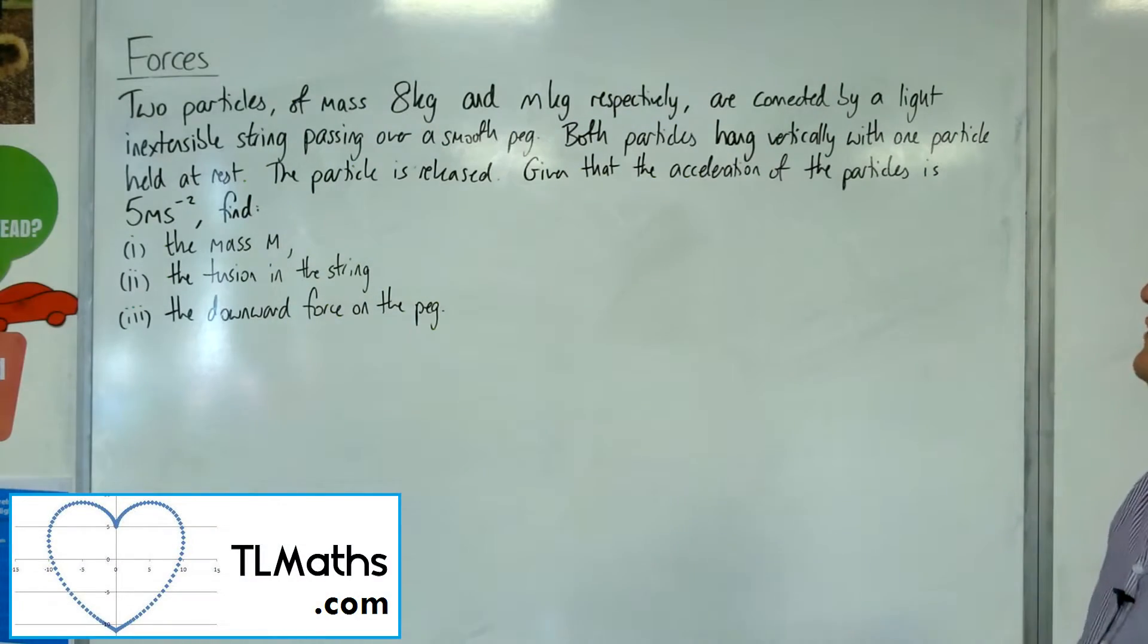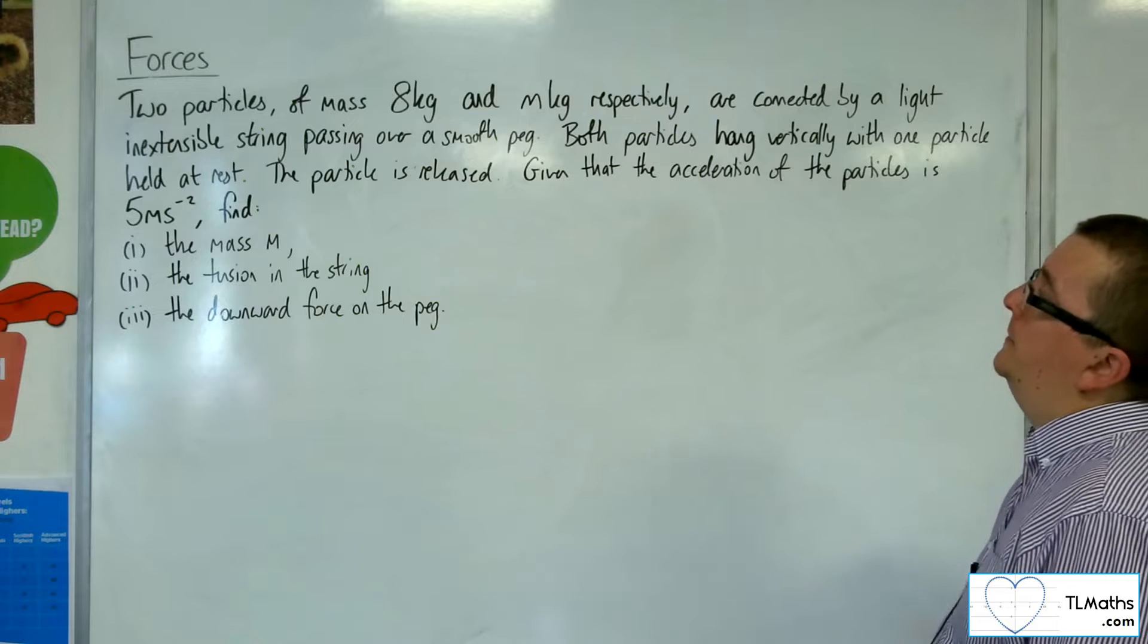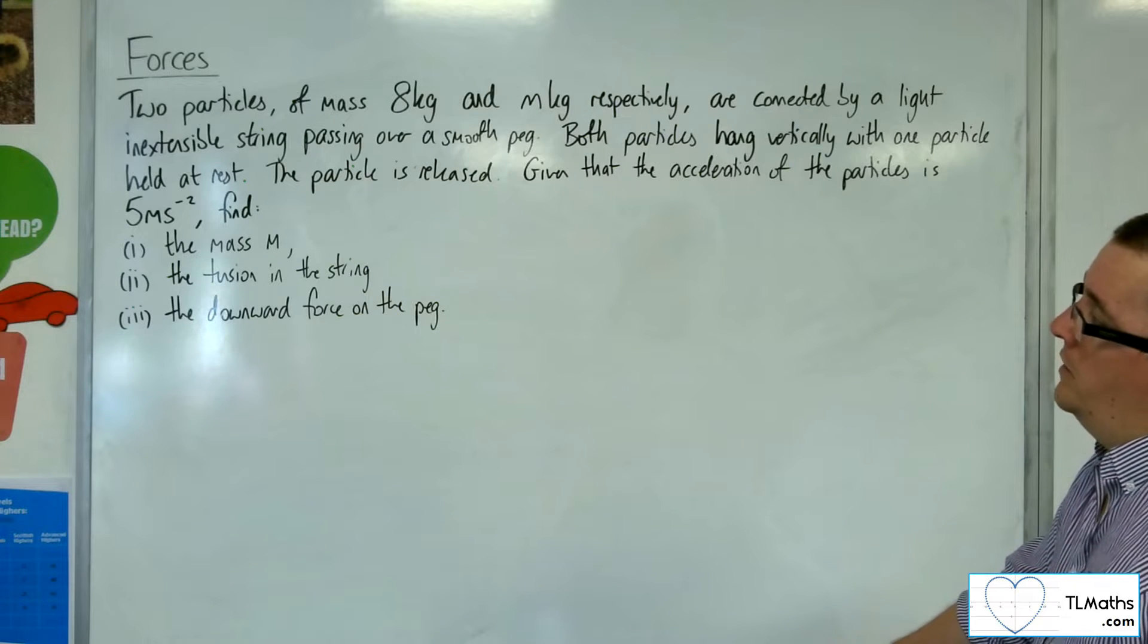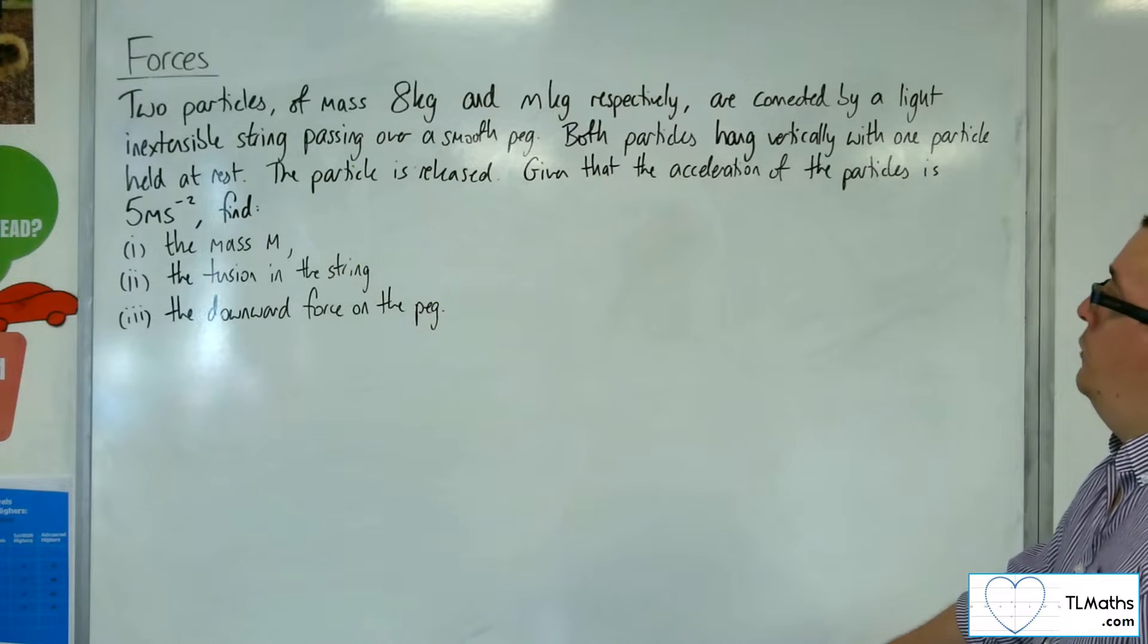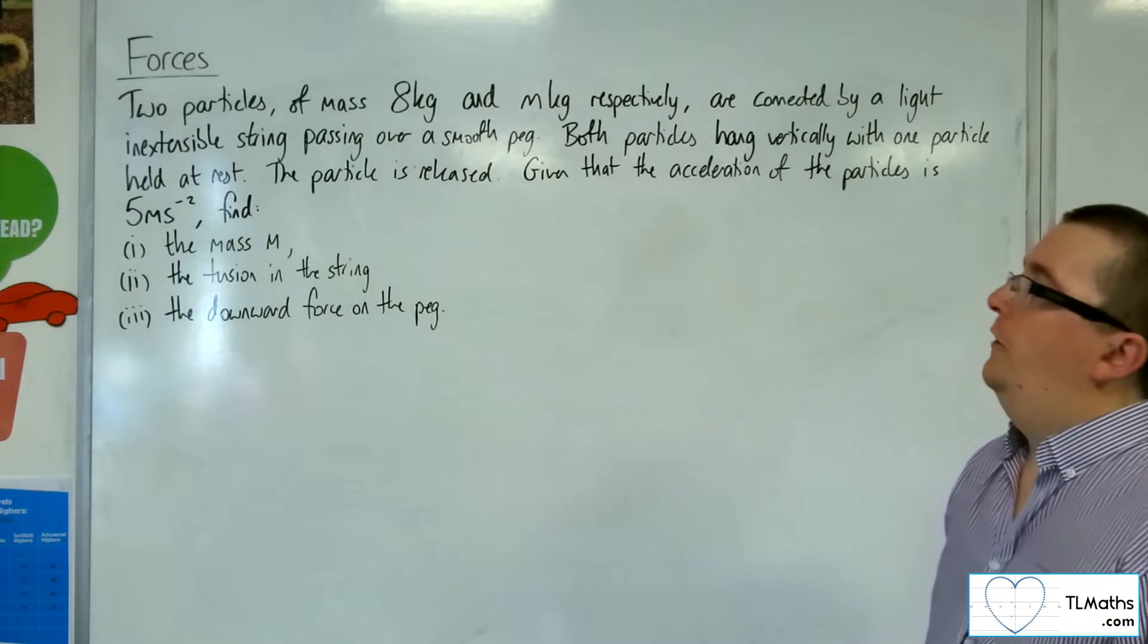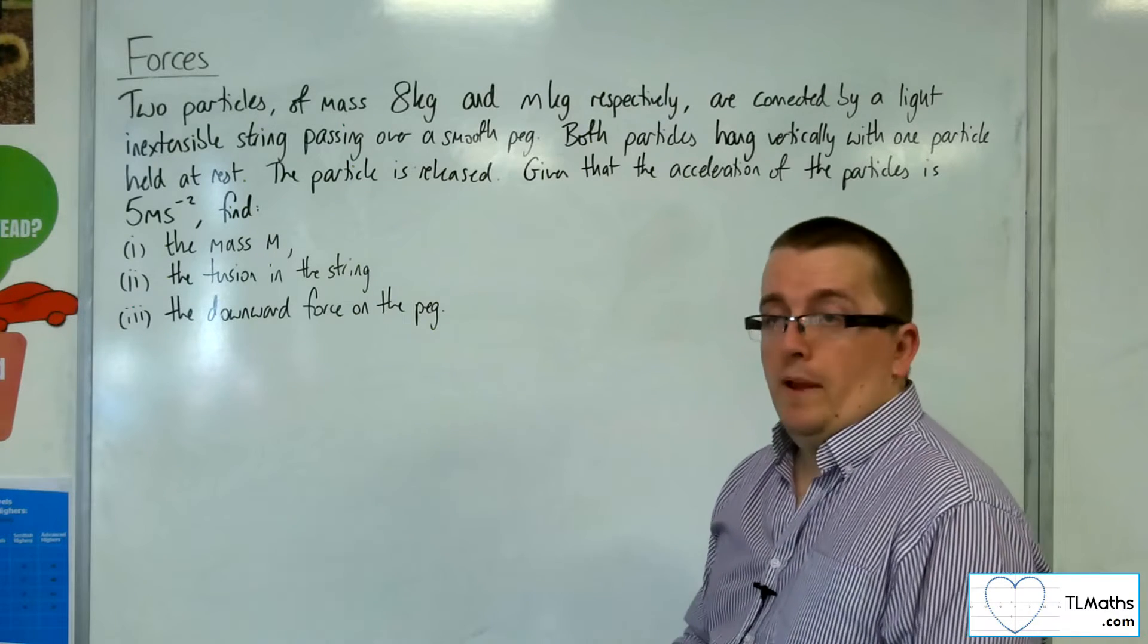In this problem we've got two particles of mass 8 kilos and m kilos respectively, connected by a light inextensible string passing over a smooth peg. Both particles hang vertically with one particle held at rest. The particle is released. Given that the acceleration of the particles is 5 metres per second per second, find the mass m, the tension in the string, and the downward force on the peg.